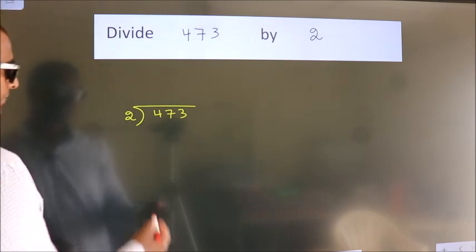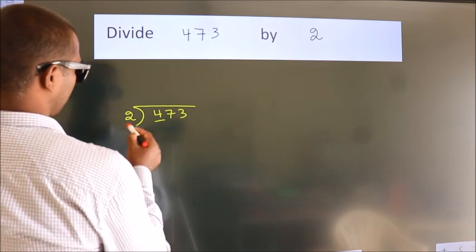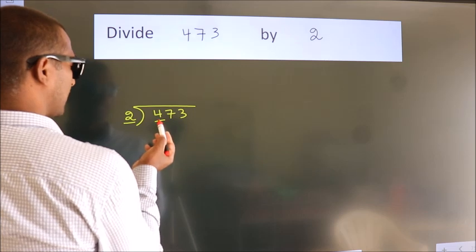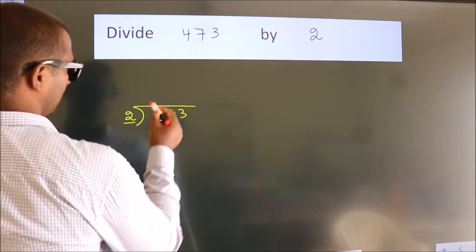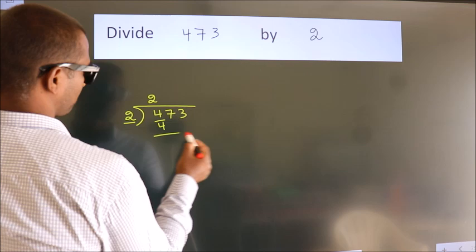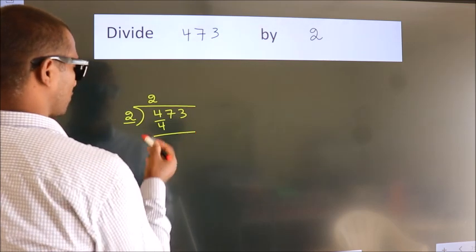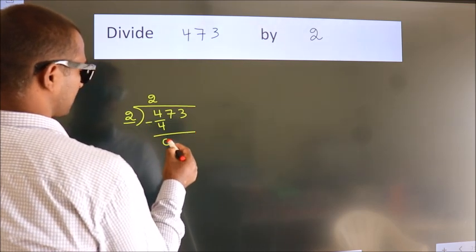Next, here we have 4, here 2. When do we get 4? In the 2 table: 2 times 2 is 4. Now we should subtract. We get 0.